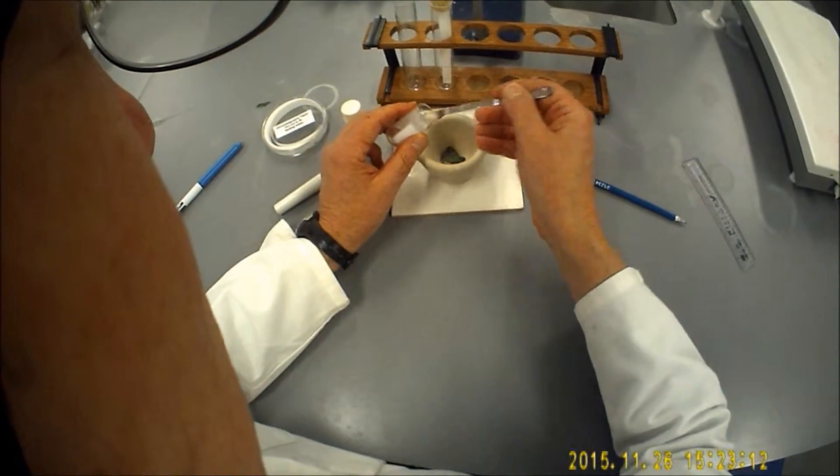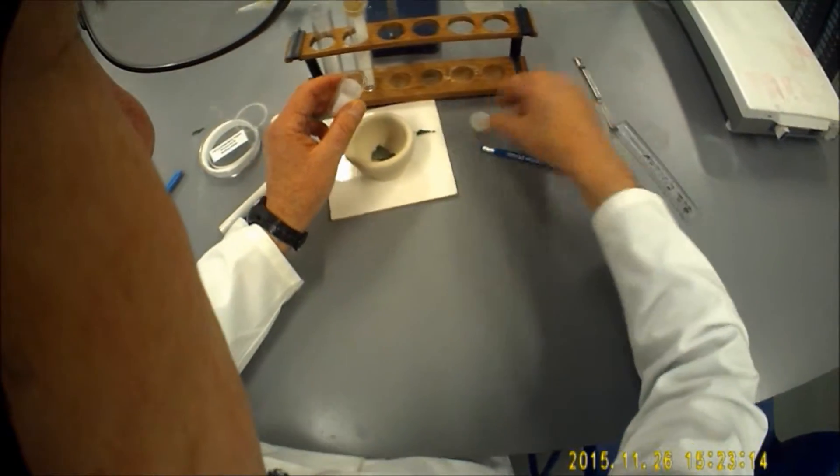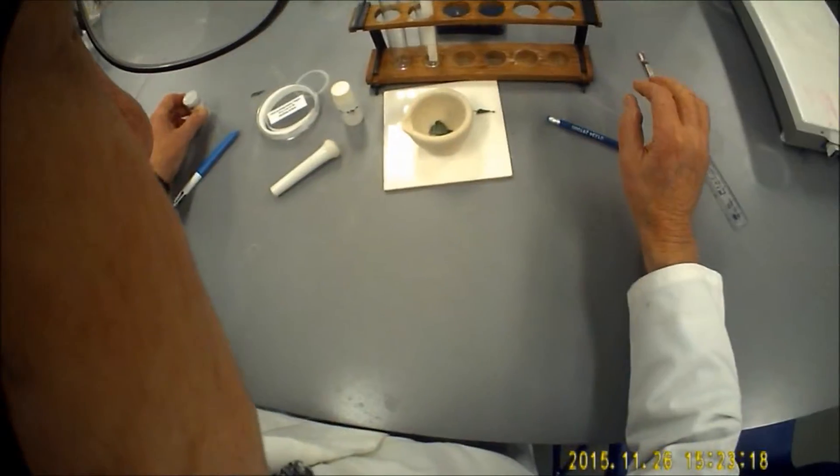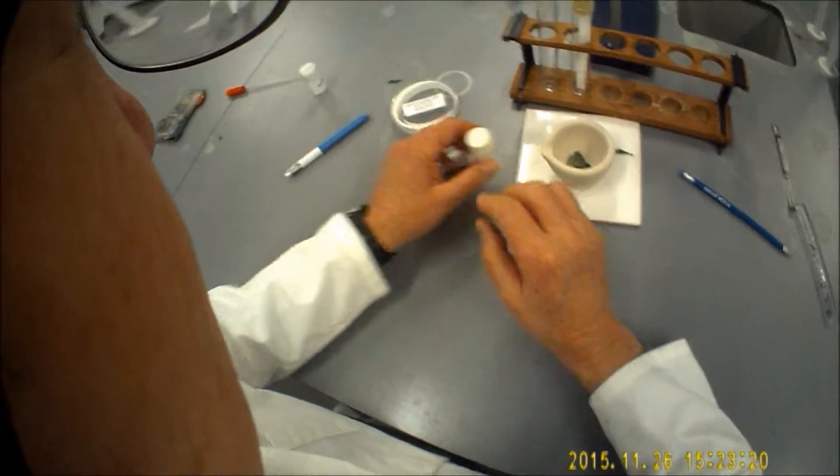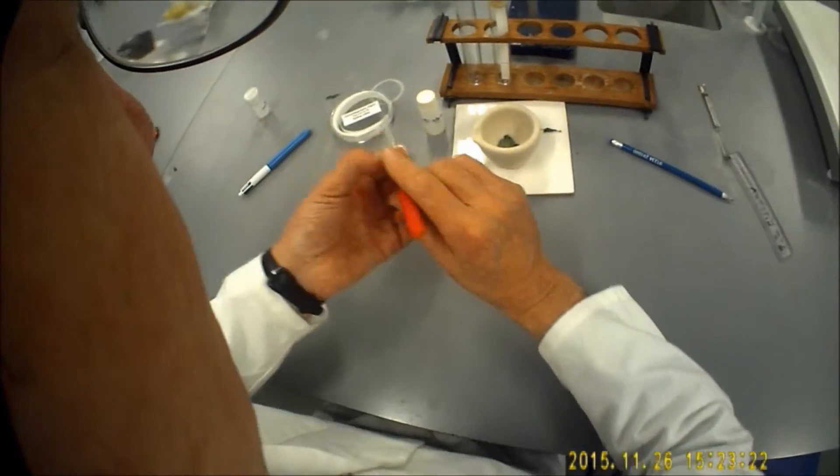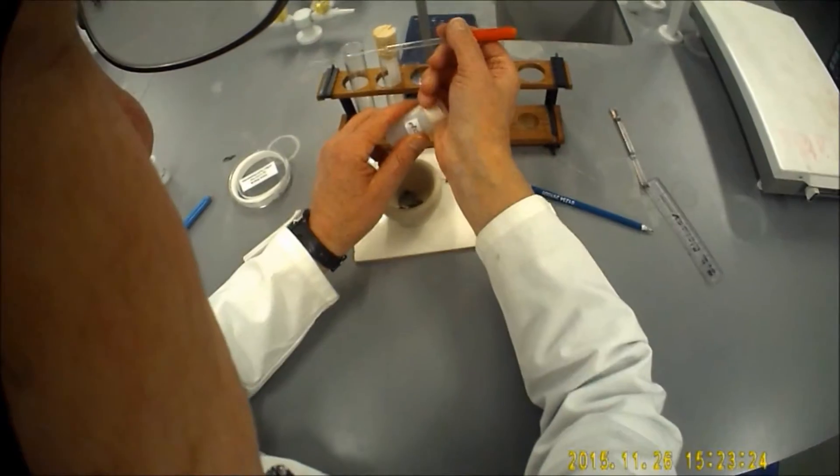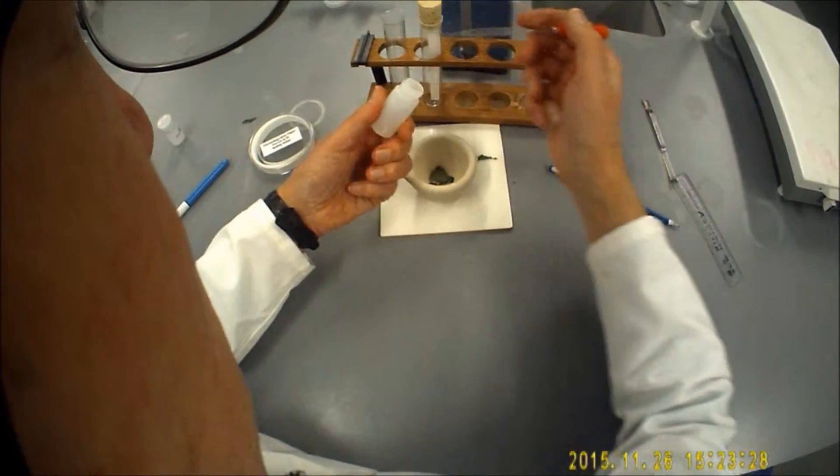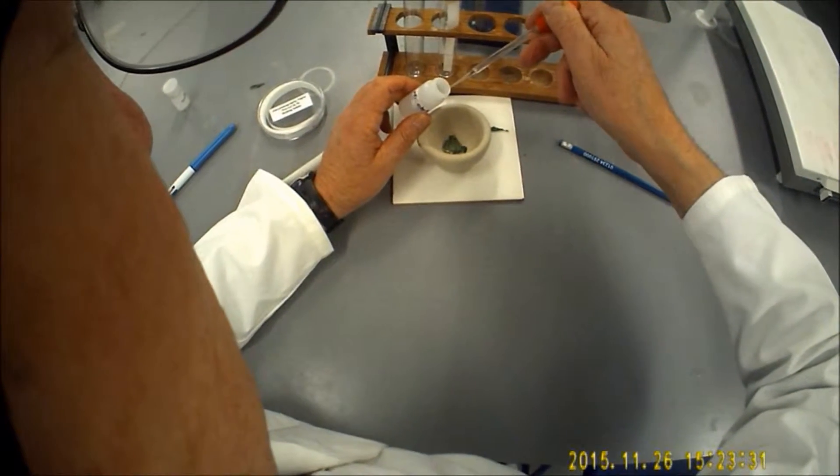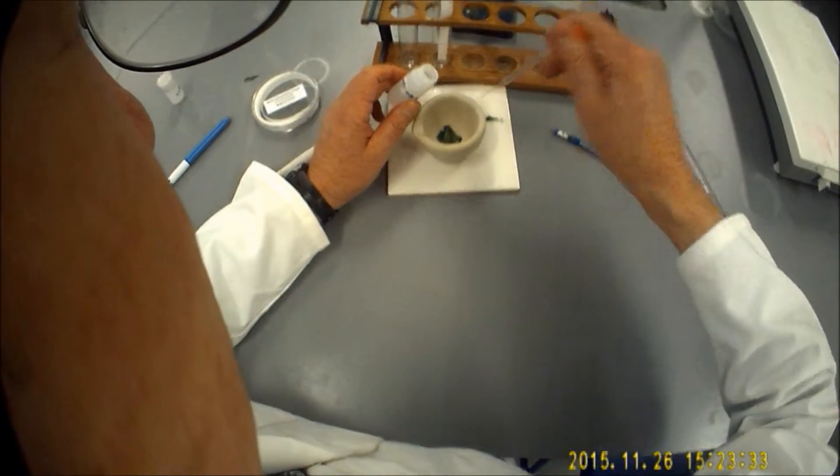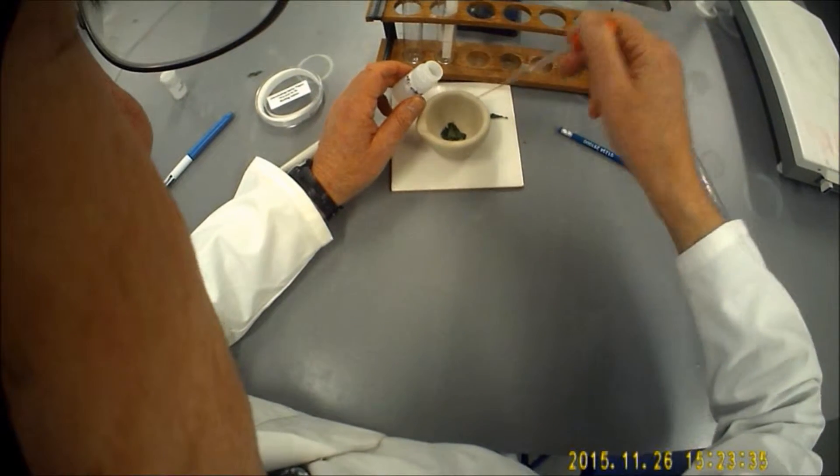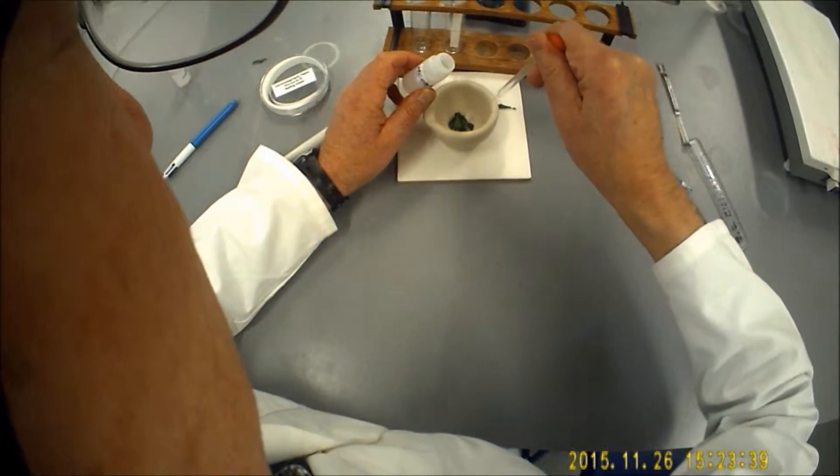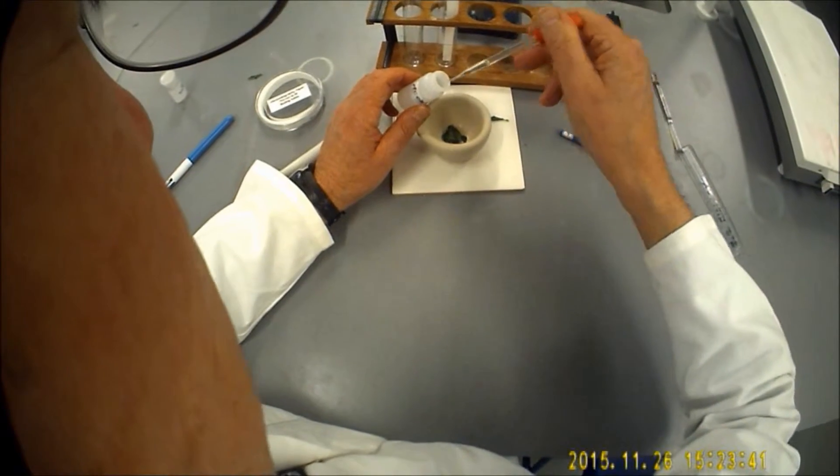This is totally inert, this sand, so it's not going to interfere with the results at all. I'm going to add a little bit of acetone now using a glass pipette. Acetone is highly flammable. So I'll just add a reasonable amount. We need to cover our leaf sample plus a bit more.